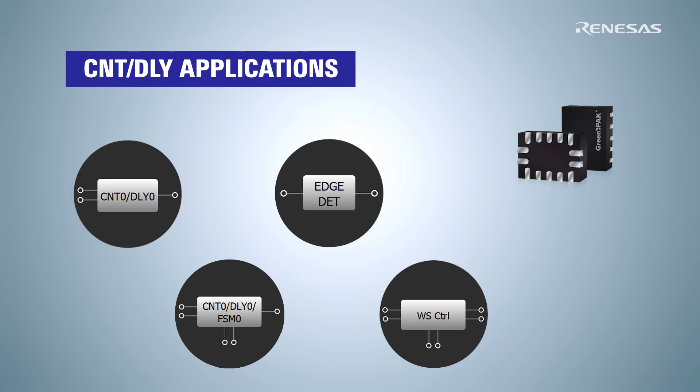GreenPack ICs contain 4 to 10 counter delay macro cells that can be applied in a vast majority of electronic devices.